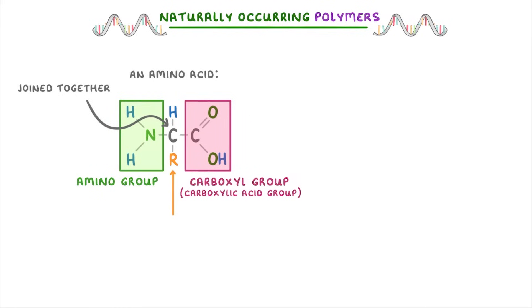There's also this group at the bottom, which is called an R group. And importantly, this one changes depending on which amino acid it is, which is what makes all the different amino acids different.